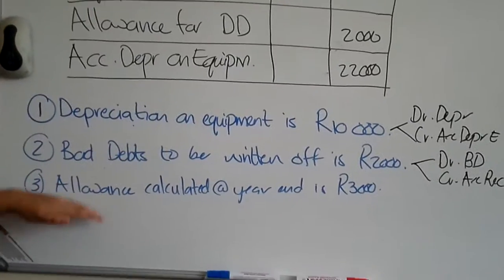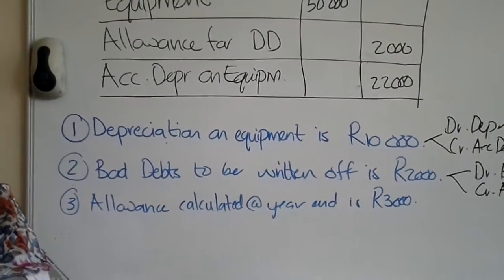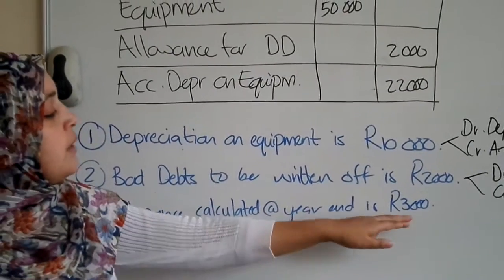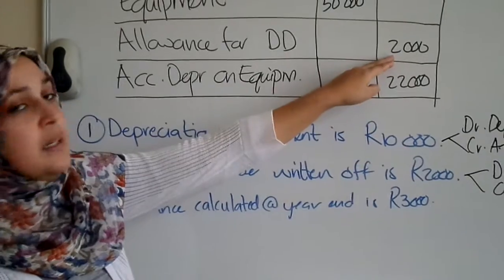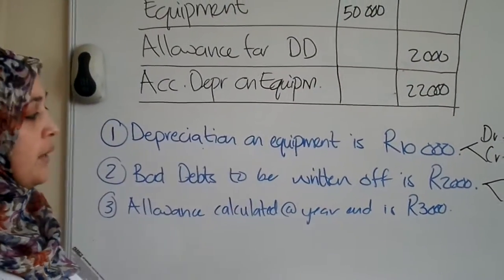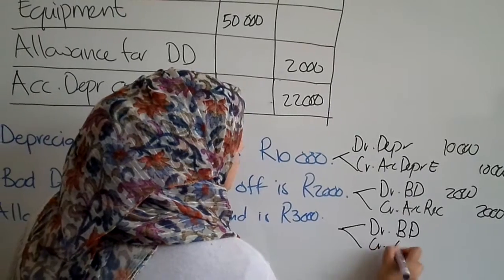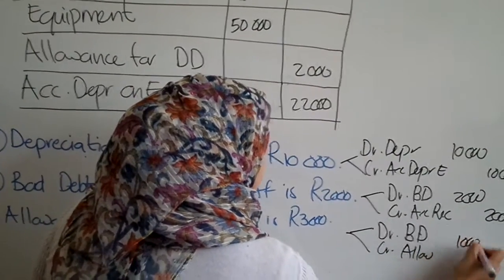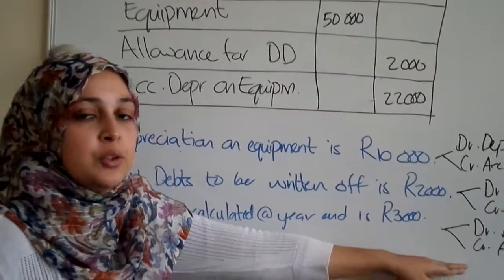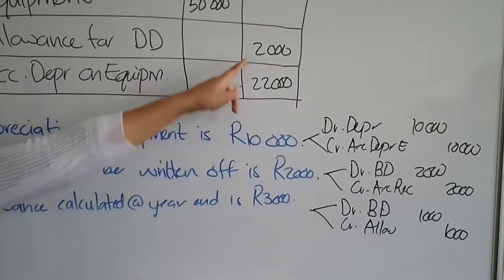For transaction three, I'm telling you the allowance calculates to 3,000 Rand. Normally you would have to go and calculate the percentage of the accounts receivable, but I've given it to you at 3,000. So your journal entry: 3,000 minus my allowance in the trial balance is 2,000, so 3,000 minus 2,000 gives me 1,000 — your allowance has increased by 1,000. So you will debit bad debts and credit your allowance with the difference of 1,000, which is the difference between 3,000 and 2,000 in your trial balance.